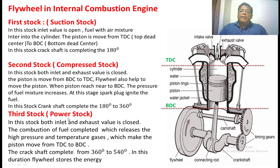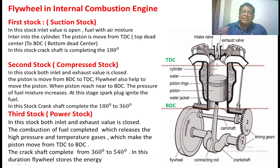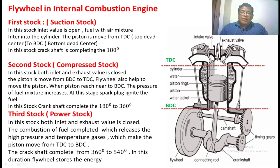In the third stroke, the power stroke, once ignition starts, high temperature and high pressure gases are generated. Because of these gases, the piston moves from TDC to BDC with high power, so the flywheel moves very fast. The crankshaft completes from 360 to 540 degrees when the piston reaches BDC.